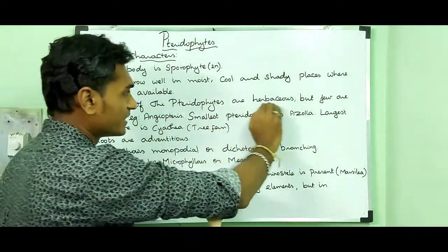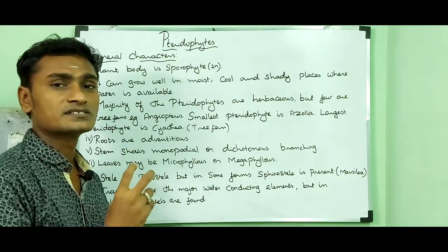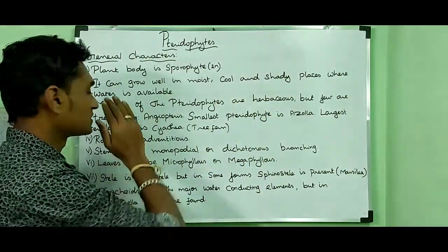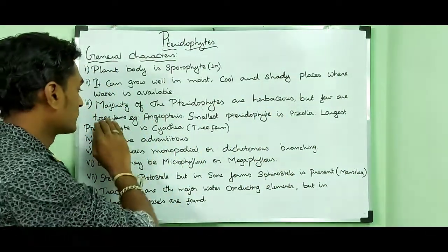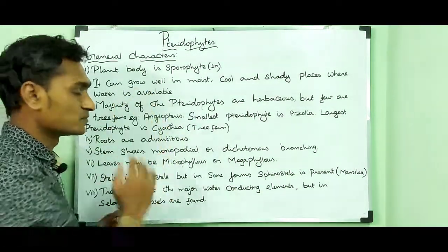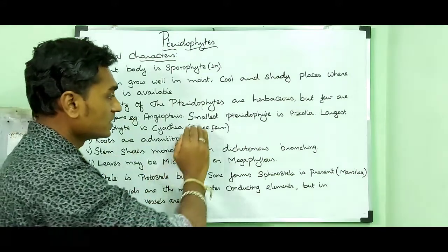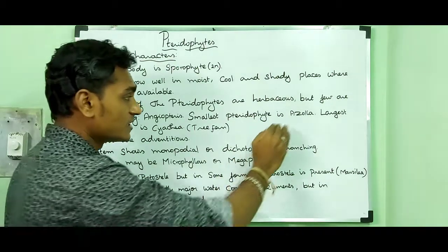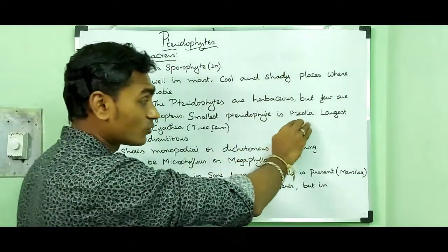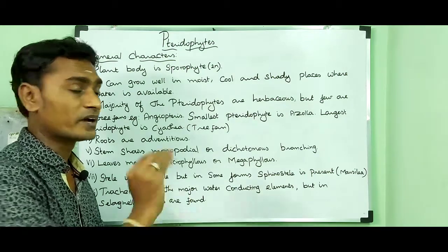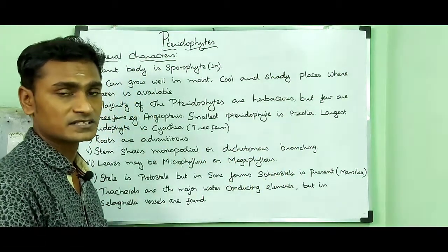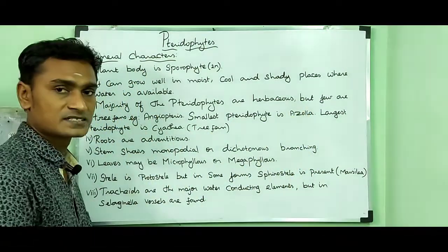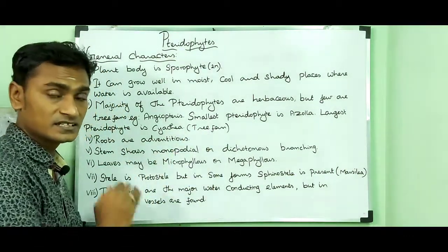The pteridophytes are generally herbaceous and possess a weak, slender stem, although a few are tree ferns. The smallest pteridophyte is Azolla, which is an aquatic fern that can be found in ponds and lakes. The largest pteridophyte is Cyathea, which is a tree fern.